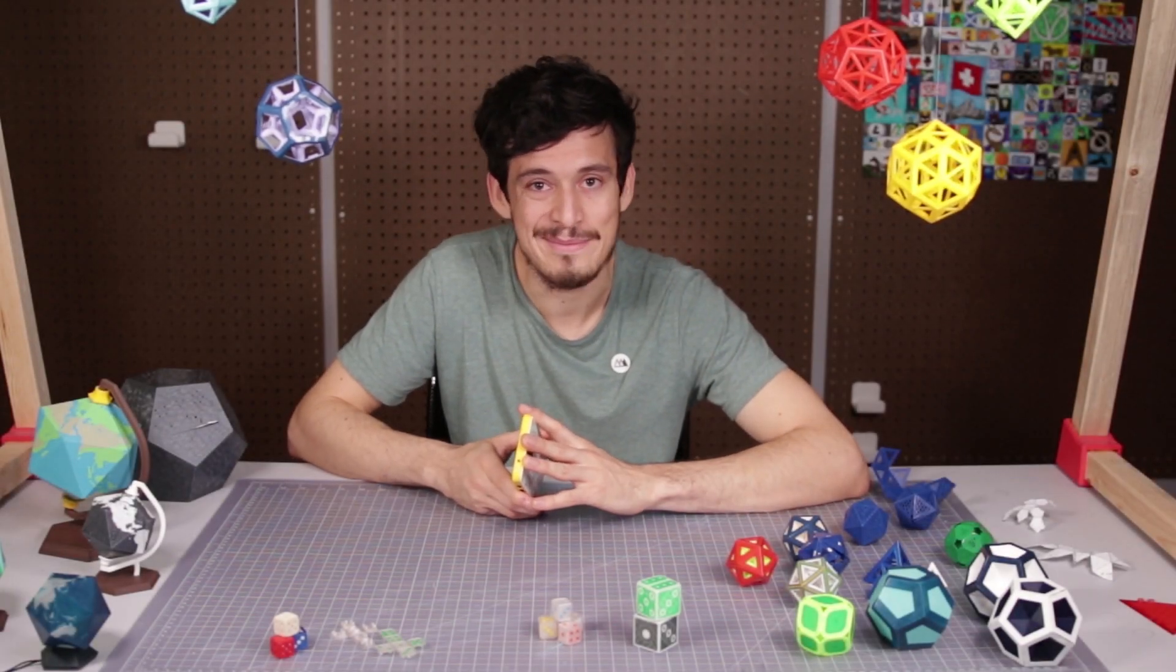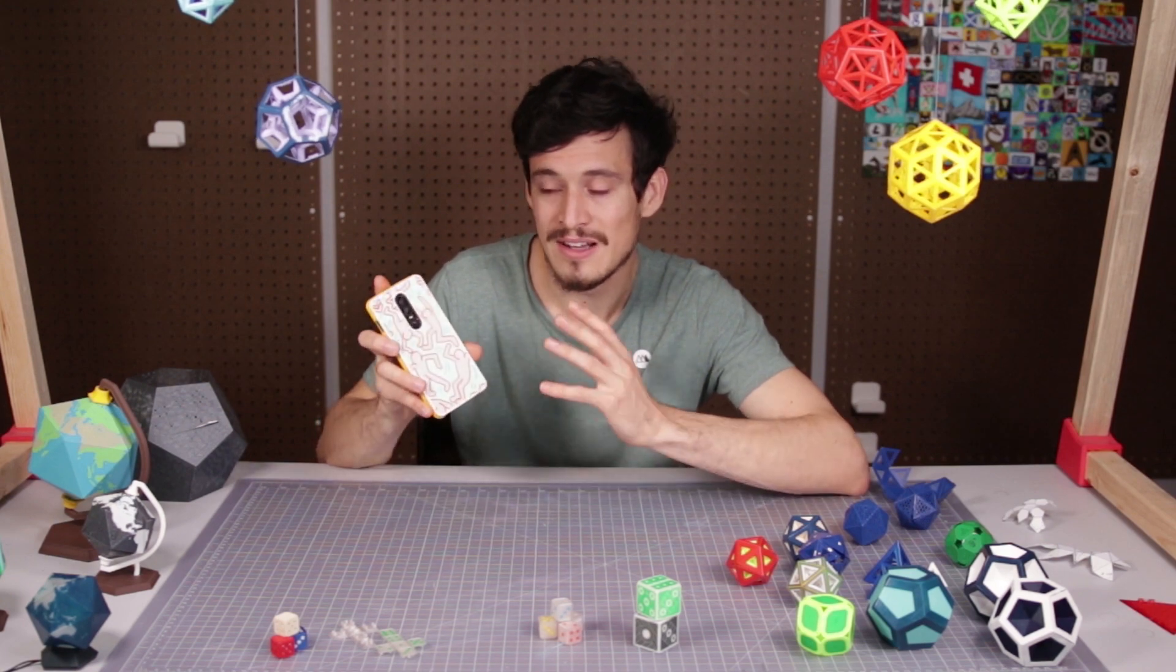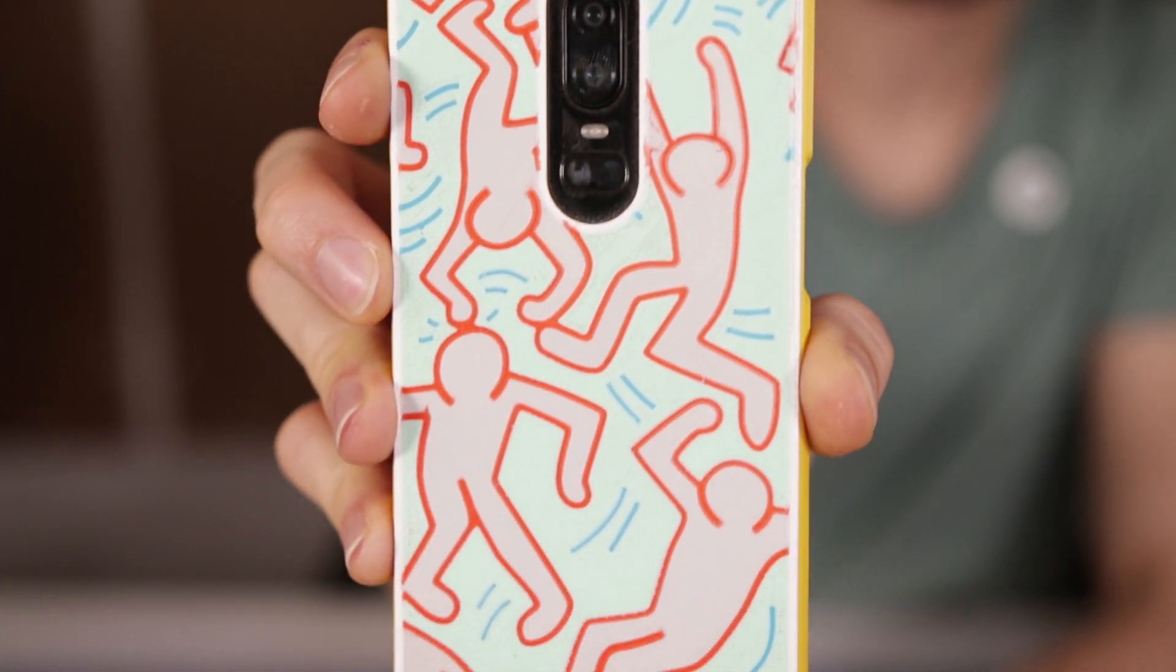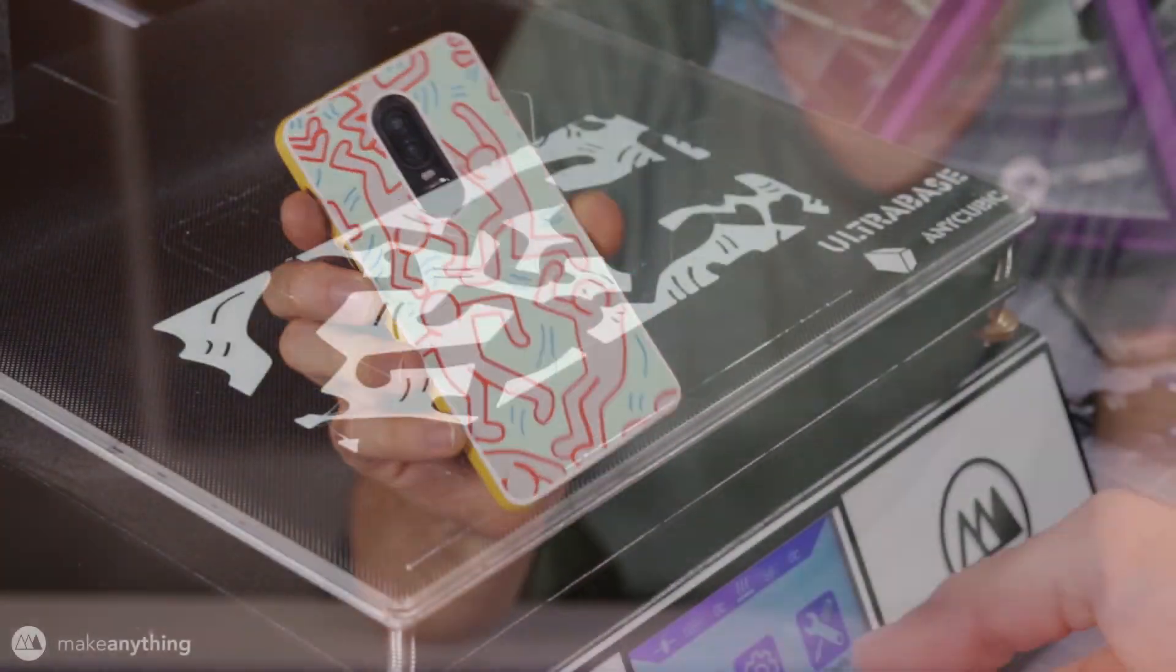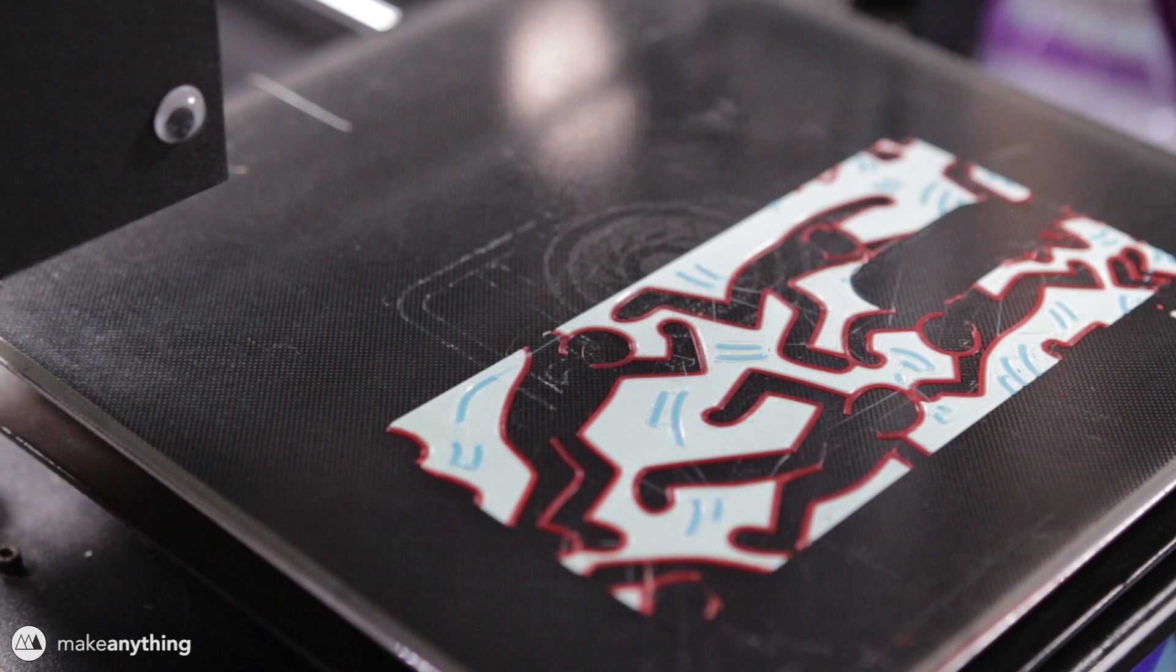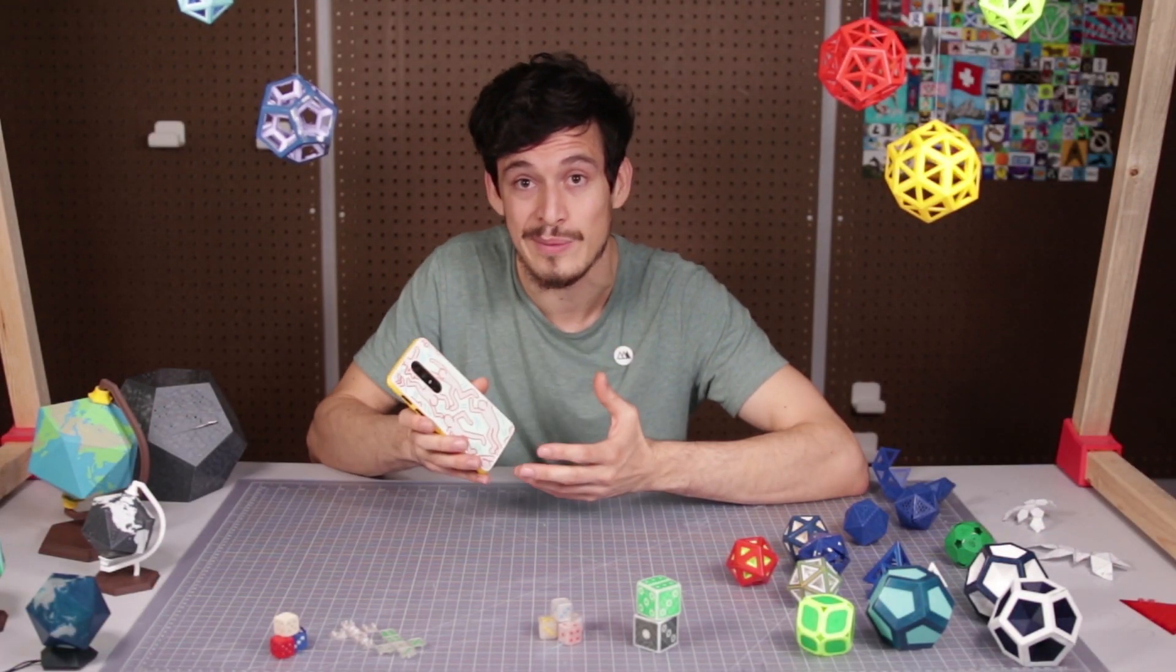Hey guys, welcome to Make Anything, I'm Devin. A few weeks ago I shared a video where we made really cool full-color phone cases on a single extruder 3D printer using this technique of doing multiple passes with different colors on the first layer of the print and then printing the rest of the model on top of that. It ended up working really well, it got me super excited.